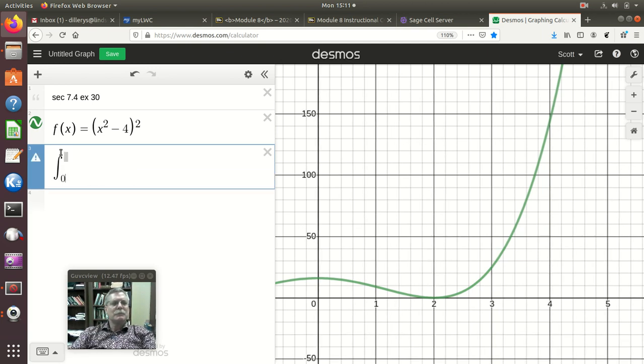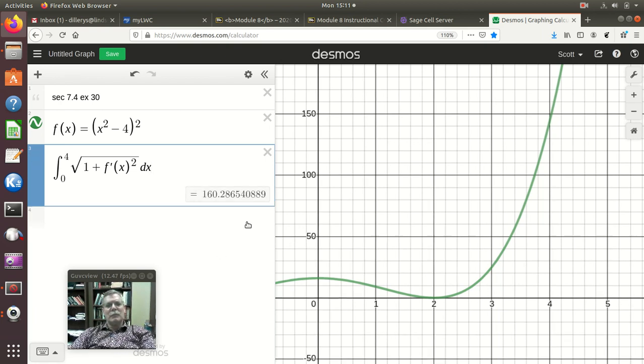So integral from 0 to 4 of the square root of 1 plus f prime of x squared, and then that's dx. We get an answer of 160 points something. And sure, why not? This goes up to 140 something up here at f of 4. And to get from here up to there is definitely more than 144 because it's going on a slant. So 160 sounds like it could be very reasonable.